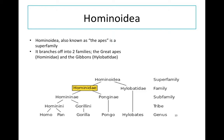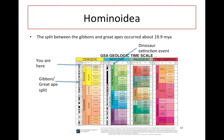Hominoidia branches off into two families: you have the gibbons — hylobatidae. This split occurred about 19.9 million years ago, and geologically speaking that's a very recent event.